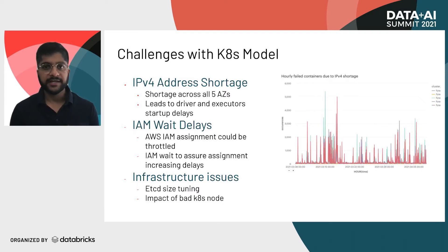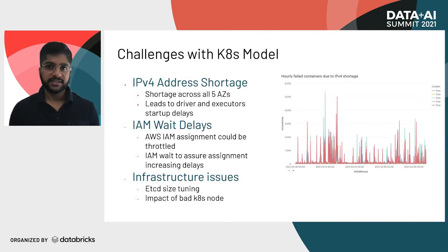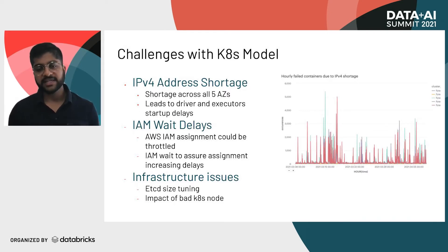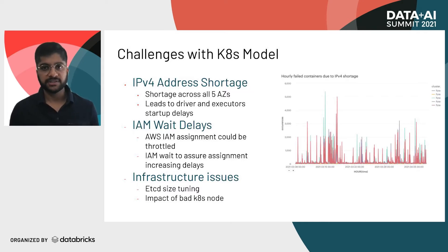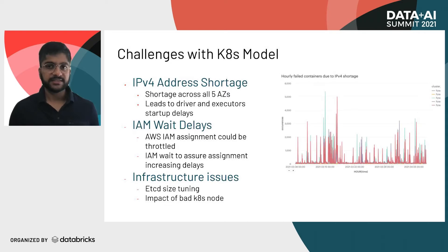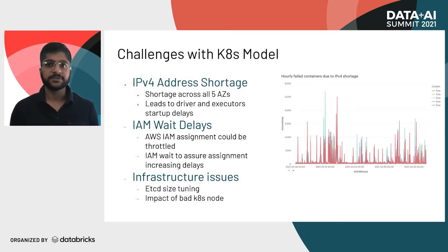The next challenge is around IAM. In this new world with everything running on Kubernetes, we support per-job IAM roles, but this caused an explosion of IAM roles. IAM role assignment comes with a cost — not only on the Kubernetes control plane, but it also adds extensive load against the AWS server, causing throttling and stability issues. We had to build a custom solution where pods have a startup container that waits on IAM assignment, adding further delay.